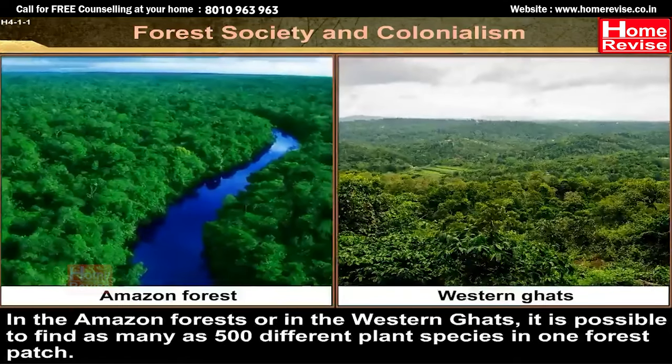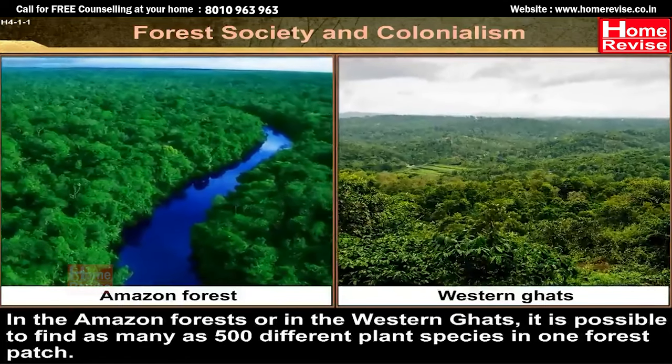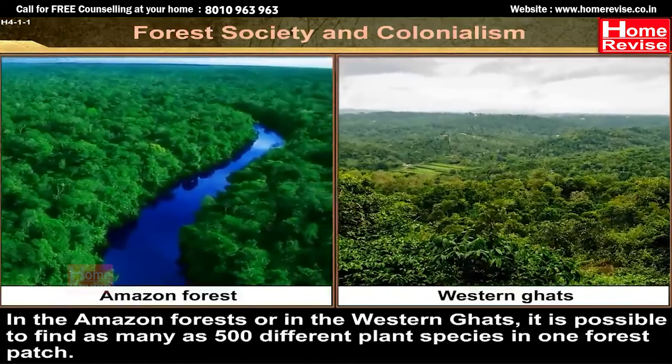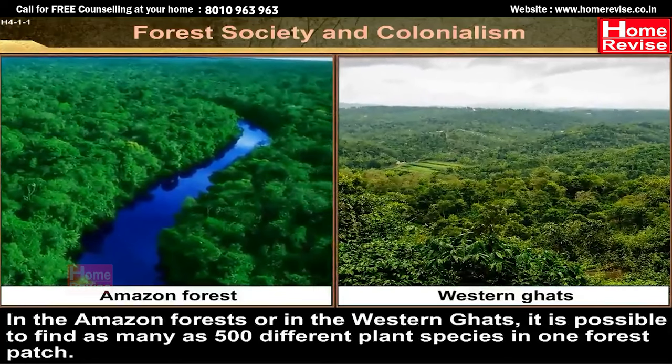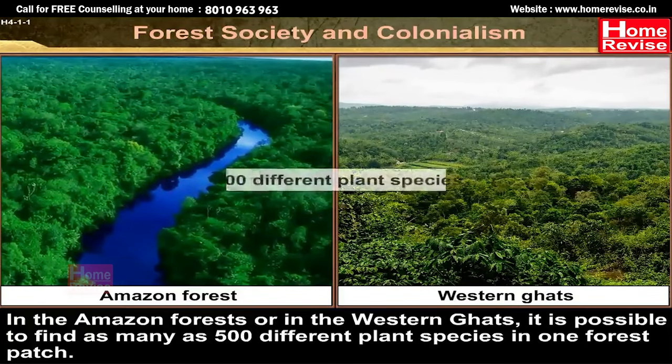In the Amazon forests or in the Western Ghats, it is possible to find as many as 500 different plant species in one forest patch.